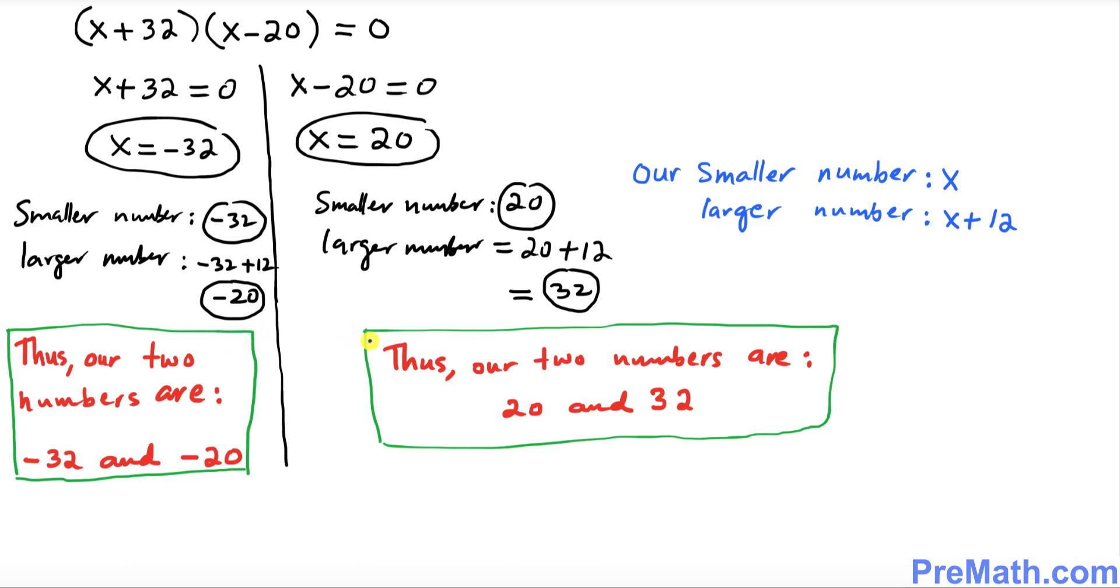Thus, we have two sets of answers. In the first scenario, our two numbers turned out to be negative 32 and negative 20. And you can see clearly the difference is 12. And if you multiply them, we get 640.